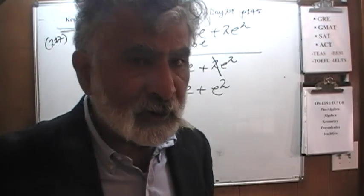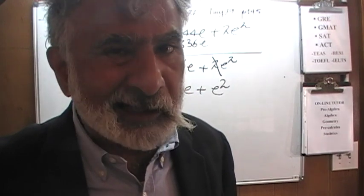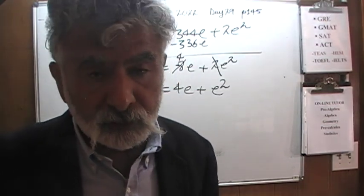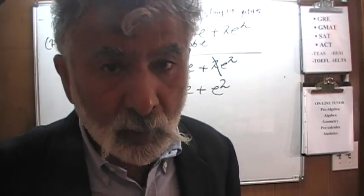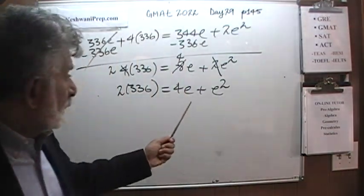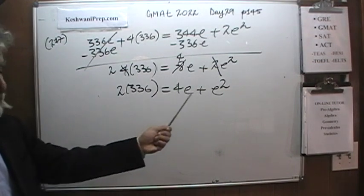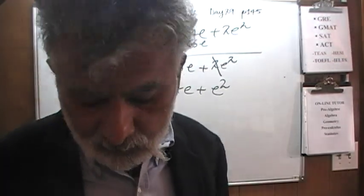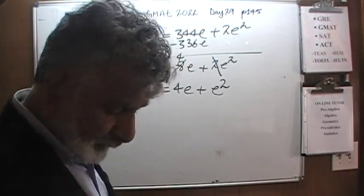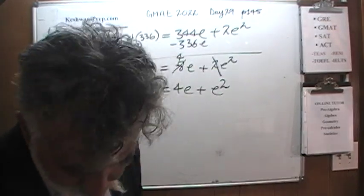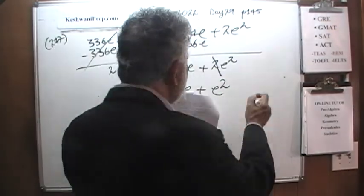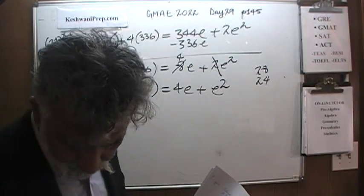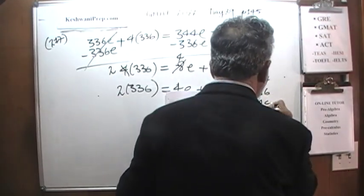At this point we have two choices: solve the quadratic formula, which would be ugly, or use a smarter approach. Since the answer choices are numerical — 28, 24, 16, 14, and 12 — and they are always arranged in numerical order, we can back-solve. We factor the left side as E(E + 4) = 2 × 336 and test the middle value first.